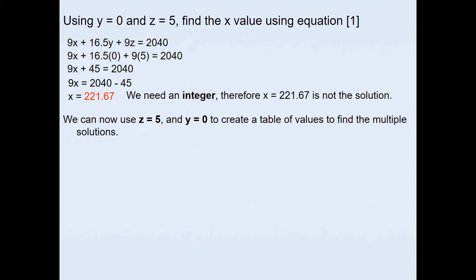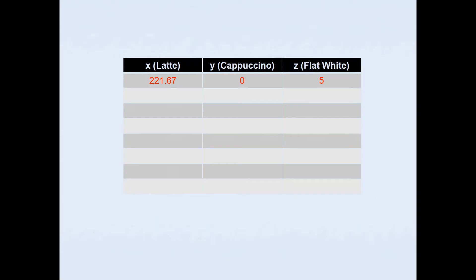What we can do now is create a table of values to find the multiple solutions. I've got X which represents latte, Y for cappuccino and Z for flat white. When Y was 0, we found the Z value which was 5, and that gave X value of 221.67. We know this cannot be the solution because we cannot have a decimal number of lattes being produced.